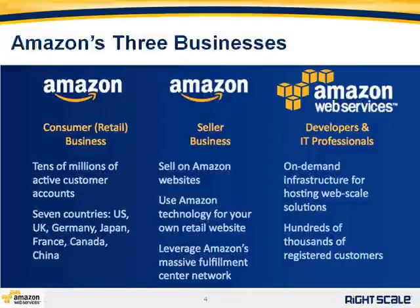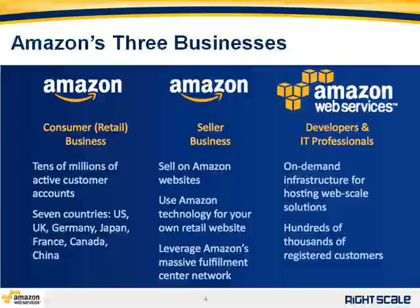A question we often get is how Amazon Web Services fits into the overall Amazon.com business. It's helpful to explain the three divisions of Amazon.com. First, we have the Amazon retail side — the Amazon.com shopping experience with tens of millions of customers worldwide. Then we have the Amazon seller business, which allows third parties to take advantage of our e-commerce infrastructure and fulfillment network. And finally, we have Amazon Web Services, our on-demand infrastructure-as-a-service cloud offering that we introduced to the market about three years ago.